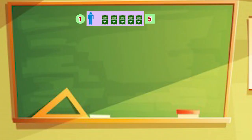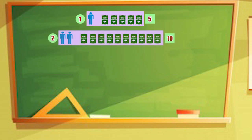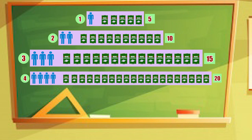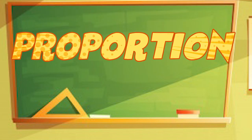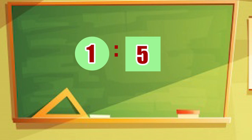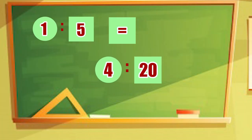So if one person receives five cans of sardines, then two persons is to 10 cans of sardines. Three is to 15. And four persons is to 20 cans of sardines. This shows proportion. Proportion is the equality of two ratios. One is to five is in proportion with or equal to four is to 20.